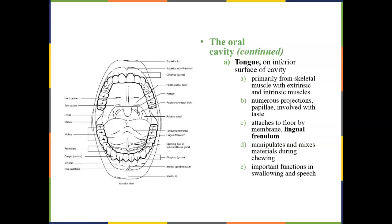The tongue is a large muscular organ housed in our oral cavity, and it has multiple functions. One of its major functions is manipulation of food so that we can move it around when we are eating. It also functions in helping us to swallow, in allowing us to speak, and in our sense of taste. Food would not be very delicious if we couldn't taste it.